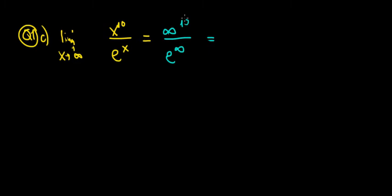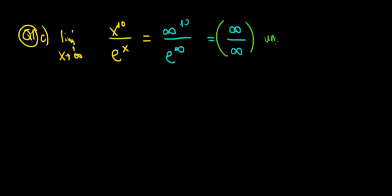A large number to the power of 10 becomes even larger, so it tends towards infinity. e to the power of infinity — e is a positive number, it's about 2.14 — raised to a very large power becomes even larger, so it also approaches infinity. Mathematicians haven't decided what infinity over infinity means, so this is undefined. I put it in brackets to note that it's undefined.